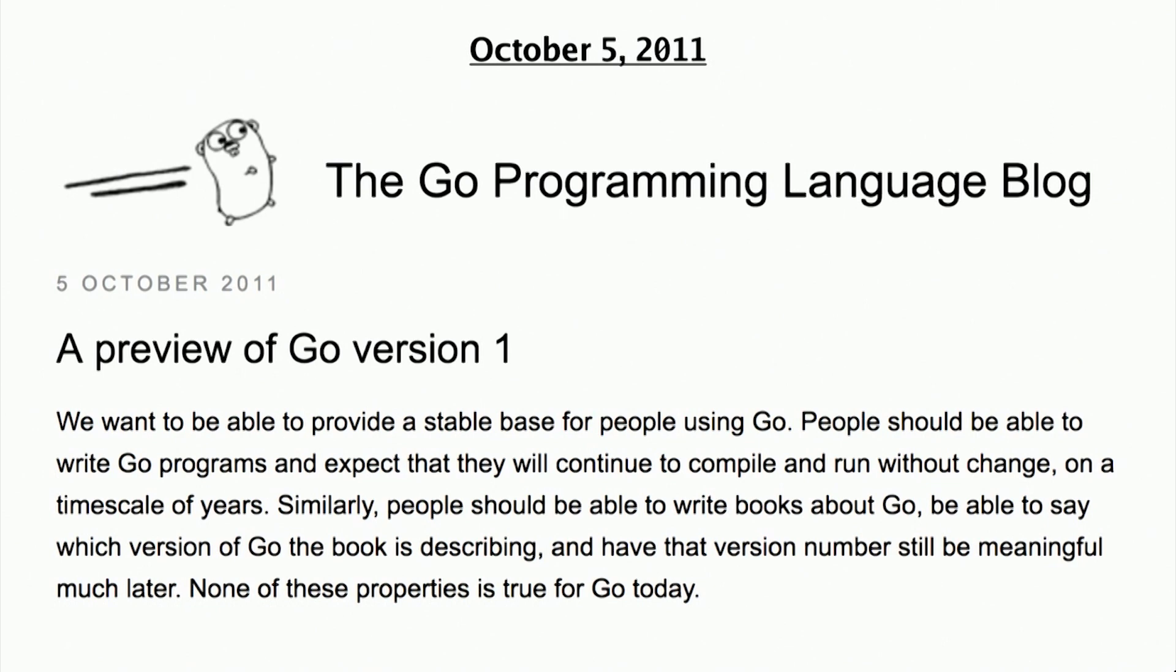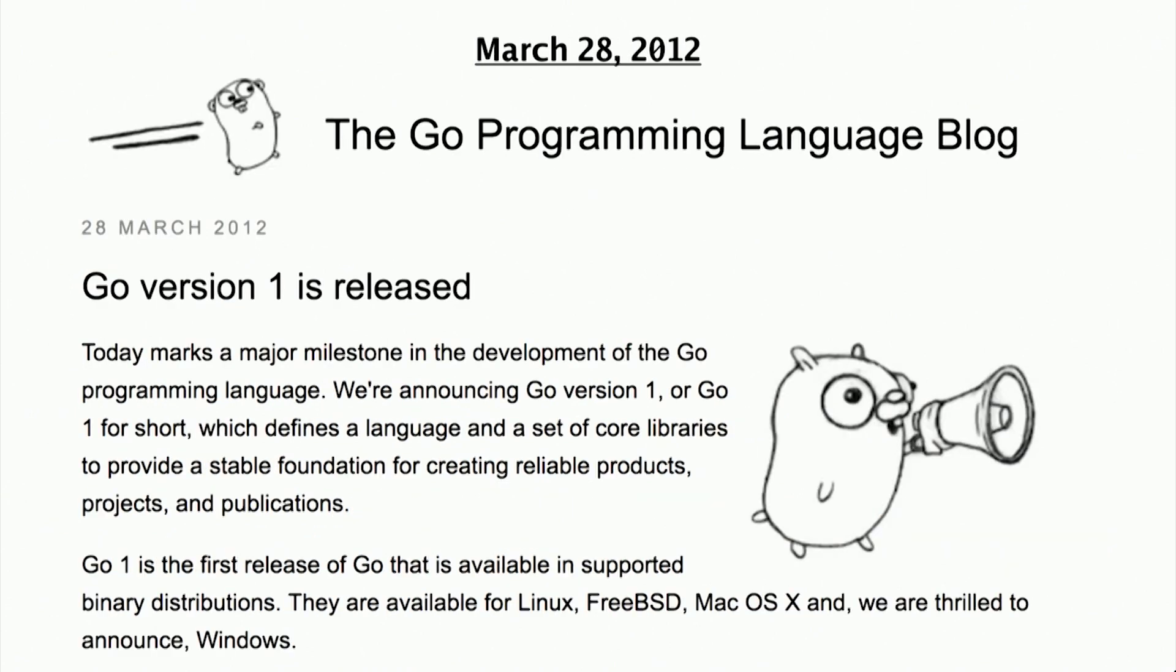With more help from the Go community, we revised and implemented that plan, eventually releasing Go 1 on March 28, 2012. The release marked the culmination of nearly five years of creative, frenetic effort that took us from a name and a list of ideas to a stable production language.